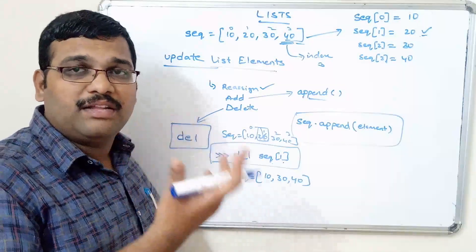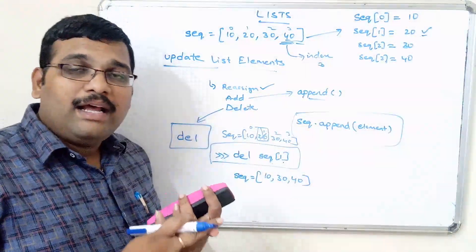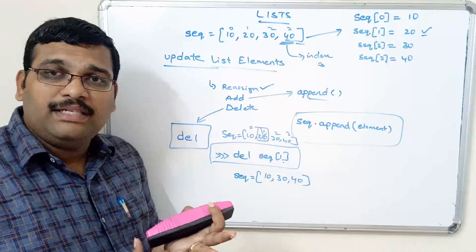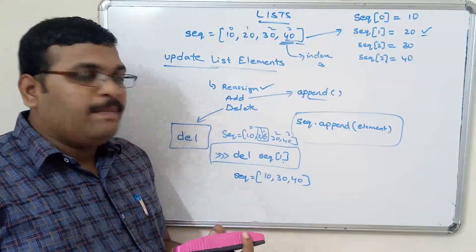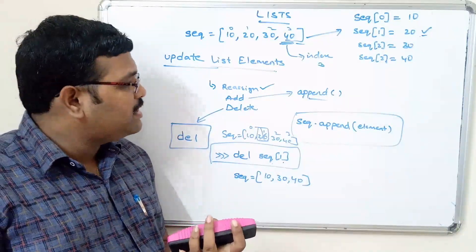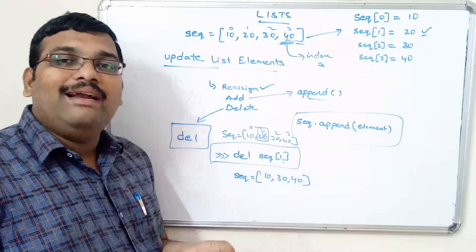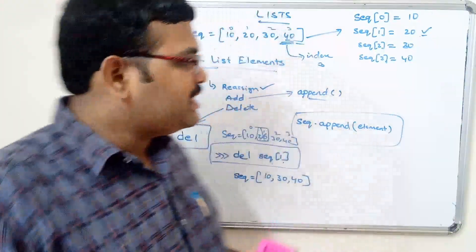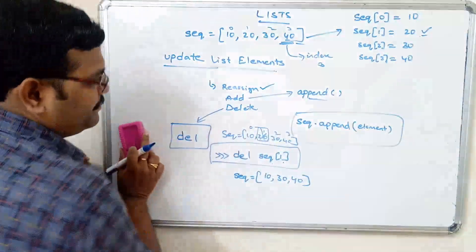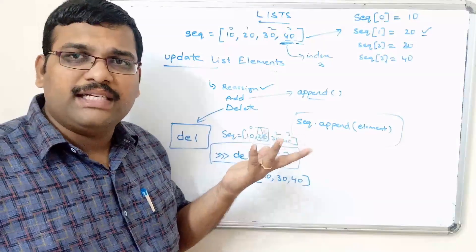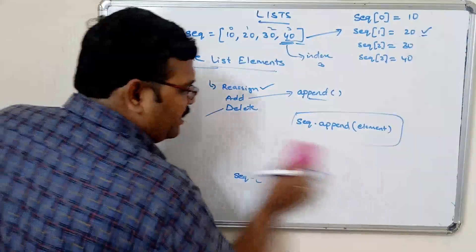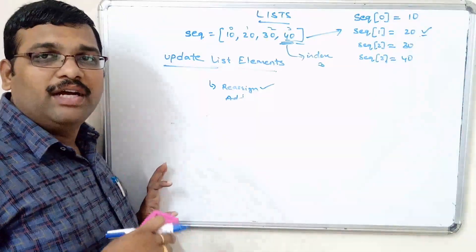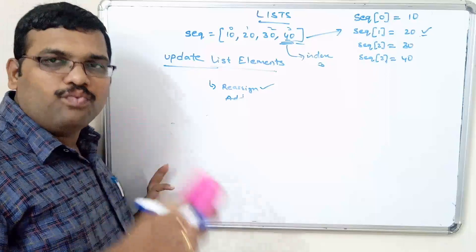These are the basic operations we can perform on a list: creating the list, inserting values, accessing elements, updating elements — which includes reassignment and adding elements — and deleting elements. For all these operations, the reference is the index value, which always starts from 0 to n minus 1.